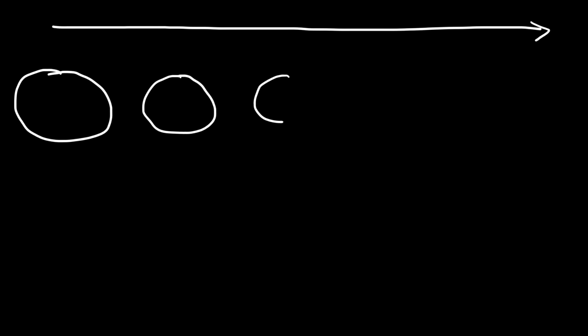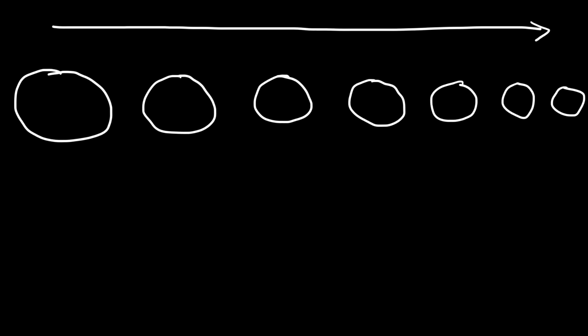As you travel toward the right in the periodic table, the atomic radius decreases — the size of atoms gets smaller as you go from left to right, generally speaking. There might be some discontinuities, but the general trend is that atoms get smaller going from left to right. So this would be a lithium atom, then beryllium, boron, carbon, nitrogen, oxygen, and fluorine.